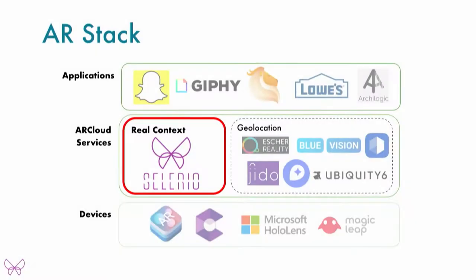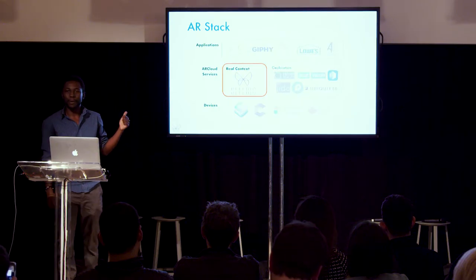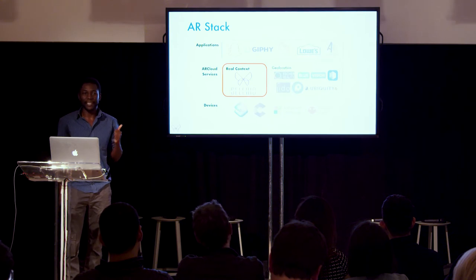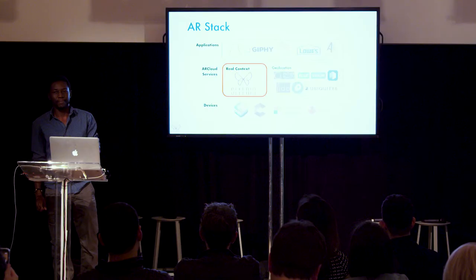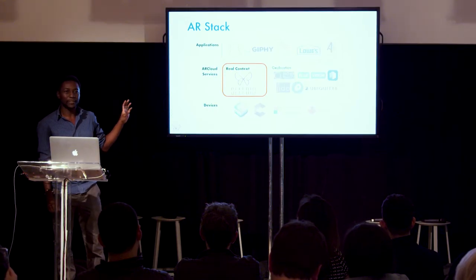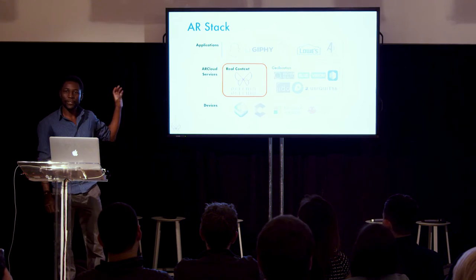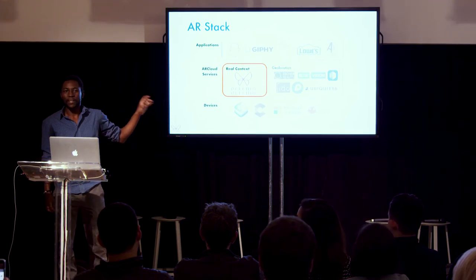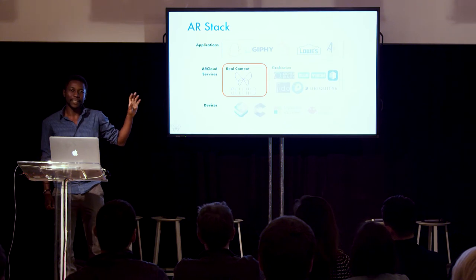How does this fit into the AR landscape? Selerio builds on top of AR devices and translates what the camera sees into data that applications can interact with. This layer is becoming publicly known as the AR cloud. I expect it to be more valuable than Google Search. Selerio is an AR cloud service unlike any other — others focus on telling you where the camera is at scale, while Selerio focuses on telling you what every physical object around us is about.